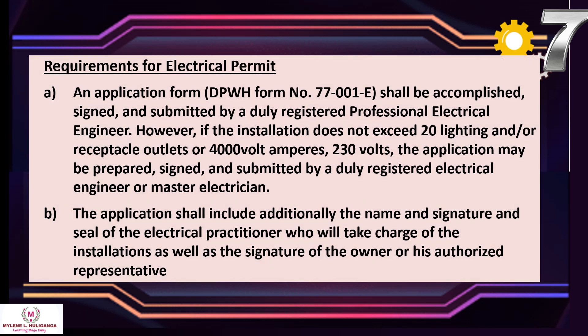Requirements for an electrical permit: (a) An application form (DPWH Form No. 77-001E) shall be accomplished, signed, and submitted by a duly registered Professional Electrical Engineer. However, if the installation does not exceed 20 lighting and/or receptacle outlets or 4,000 volt-amperes at 230 volts, the application may be prepared, signed, and submitted by a duly registered Electrical Engineer or Master Electrician. (b) The application shall additionally include the name, signature, and seal of the electrical practitioner who will take charge of the installations, as well as the signature of the owner or authorized representative.